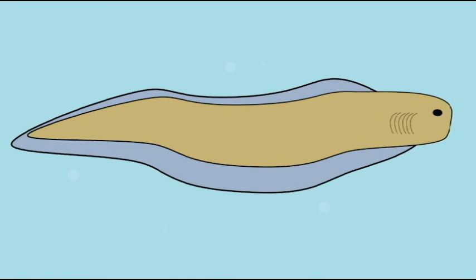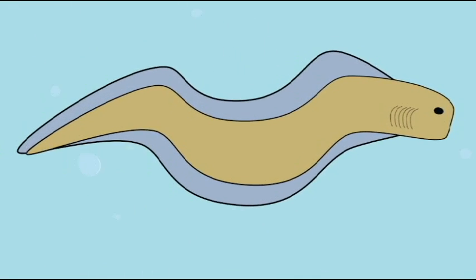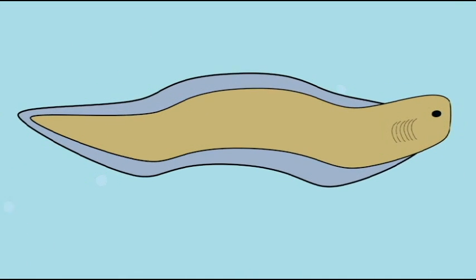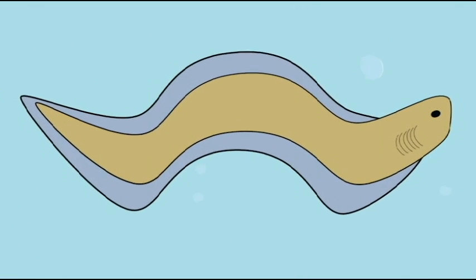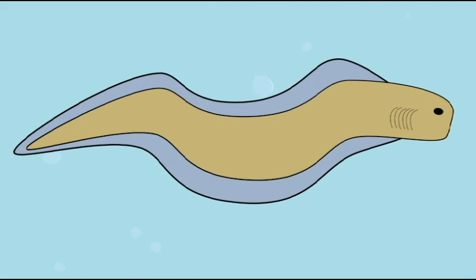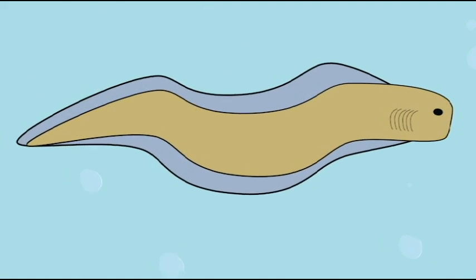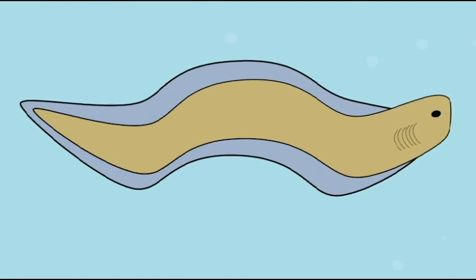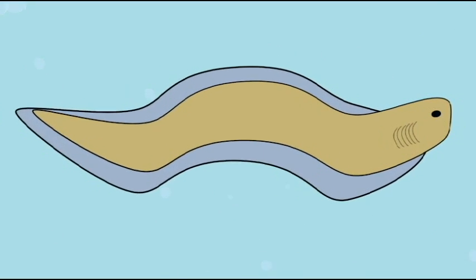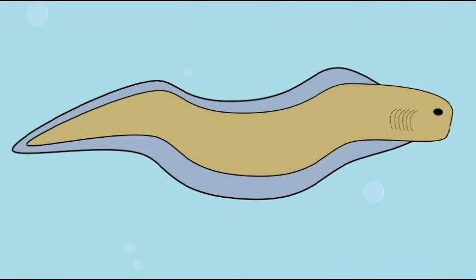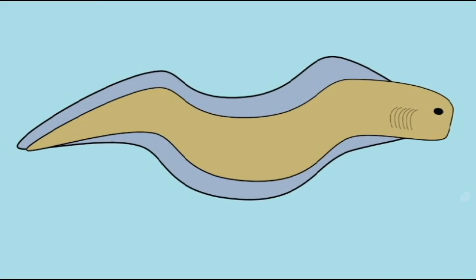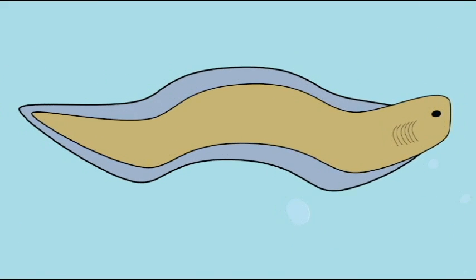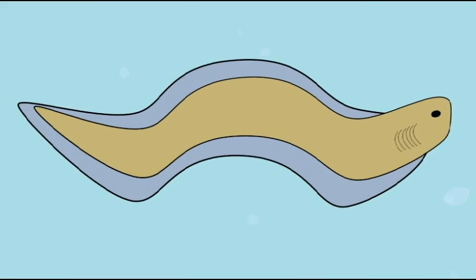Instead, it seems to be closer to the taxonomic position of the hagfish, which are classified as craniates but not as true vertebrates. This is a tiny primitive fish that may be similar to hagfish in being taxonomically a little simpler than true vertebrates.